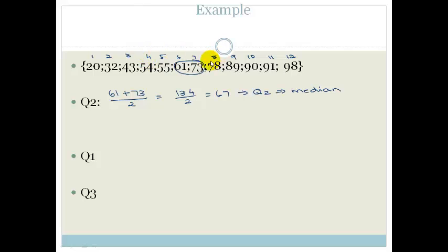Now let's look at Q1. If you look at Q1, you can see that the middle number of the bottom numbers is 43. So that makes life very easy. And if we look at this, we can see that the middle of these is 90. So now we have Q2, Q1, and Q3.